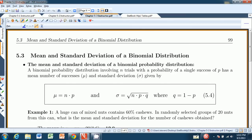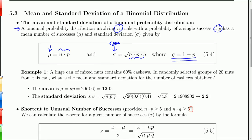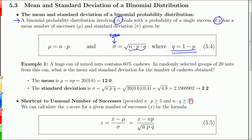So 5.3, the mean and standard deviation of a binomial distribution. Let's get into full screen mode. If we have a binomial probability distribution with n trials and a probability of a single success as p, then the mean is given by n times p. Simple, right? And the standard deviation sigma is given by the square root of n times p times q. And again, q is 1 minus p as it will remain throughout this book.